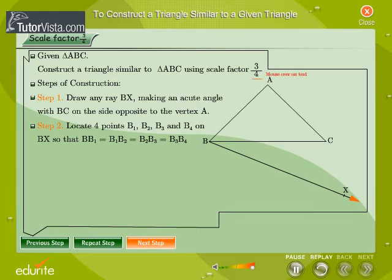Step 2: Locate four points (four being the greater of three and four in the ratio) B1, B2, B3, and B4 on BX so that BB1 = B1B2 = B2B3 = B3B4.